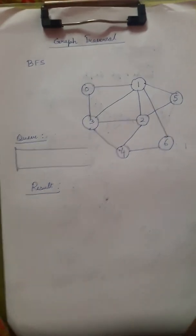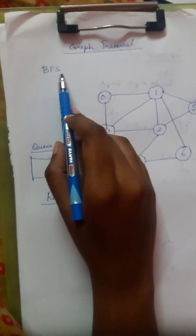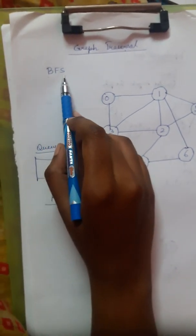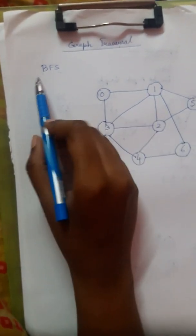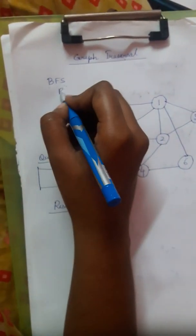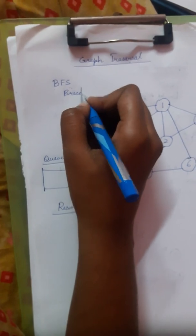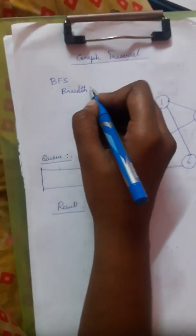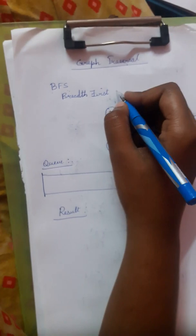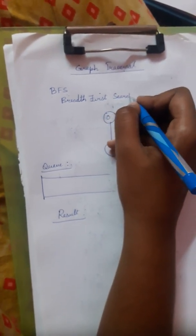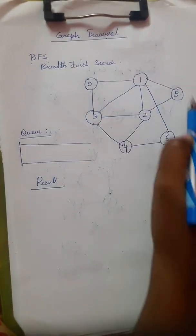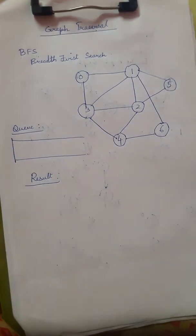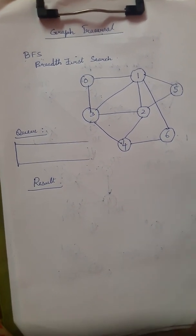The next topic is graph traversal — Breadth First Search (BFS). There are two types of graph traversal: BFS and DFS. BFS means we are searching breadth-wise throughout the graph.